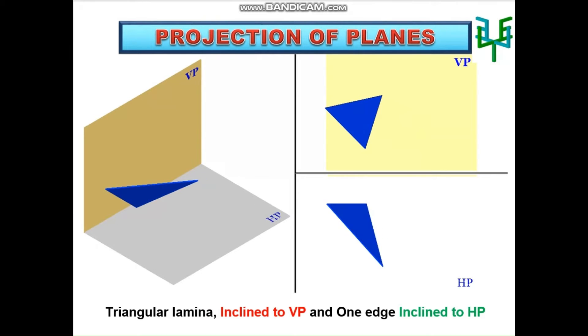The projections of this case can be drawn in three stages. The lamina is inclined to VP and one edge of it is inclined to HP. Inclination of the lamina should be made parallel and inclination of the edge should be made perpendicular.